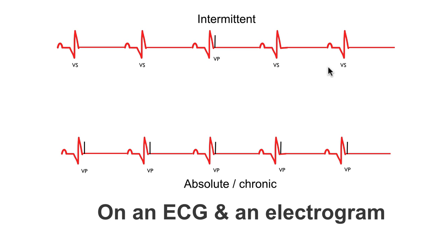Normal service is resumed on the next two heartbeats, so we can say that this is intermittent under-sensing. In the example below, we can see that the atria depolarizes, the AV delay is started in the pacemaker, and again the ventricular depolarization isn't sensed. So just like the previous example, the pacemaker sends an output pulse, which fails to capture the now refractory ventricular tissue.